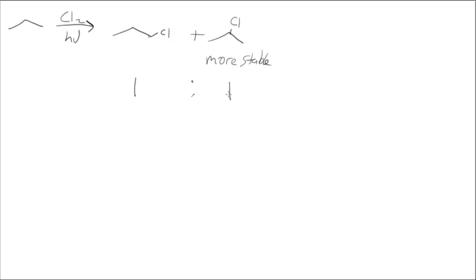And thermodynamics, or stability, isn't the only thing helping determine what product we get. So what else might be happening here? That's the question we want to ask ourselves. Why is it one-to-one when we would expect mostly secondary?